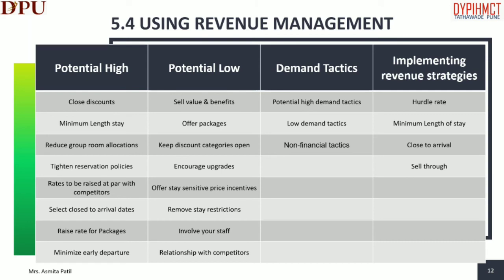In case of low demand tactics: sell value and benefits — rather than just lowering rates, make sure guests know they have the right product and the best value. Sell the various values and benefits of staying at the property versus competitors. Offer packages: combine accommodations with a number of desirable products and services into single packages with one price. Mention any additions, renovations or new amenities. Non-room revenue can be included, such as free movies and discounted attraction tickets.